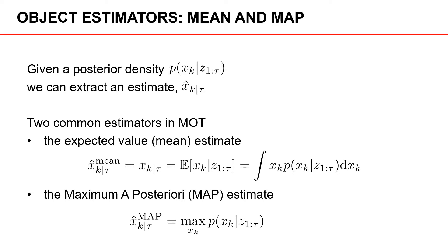Given a posterior density, we can extract an estimate which we denote x̂_{k|τ}. So we have the estimate at time k given measurements up to and including time tau.